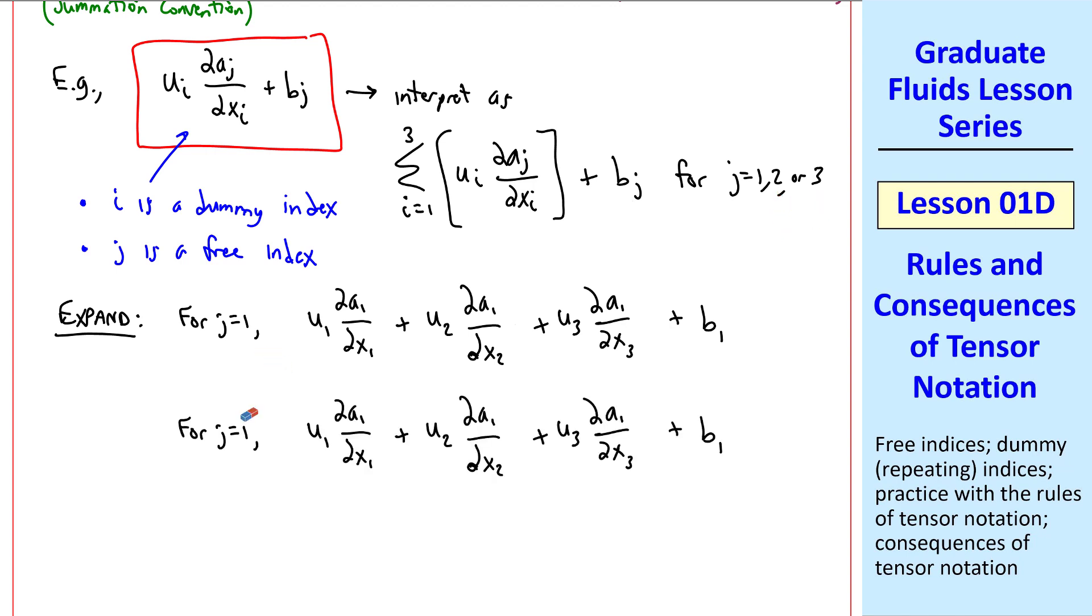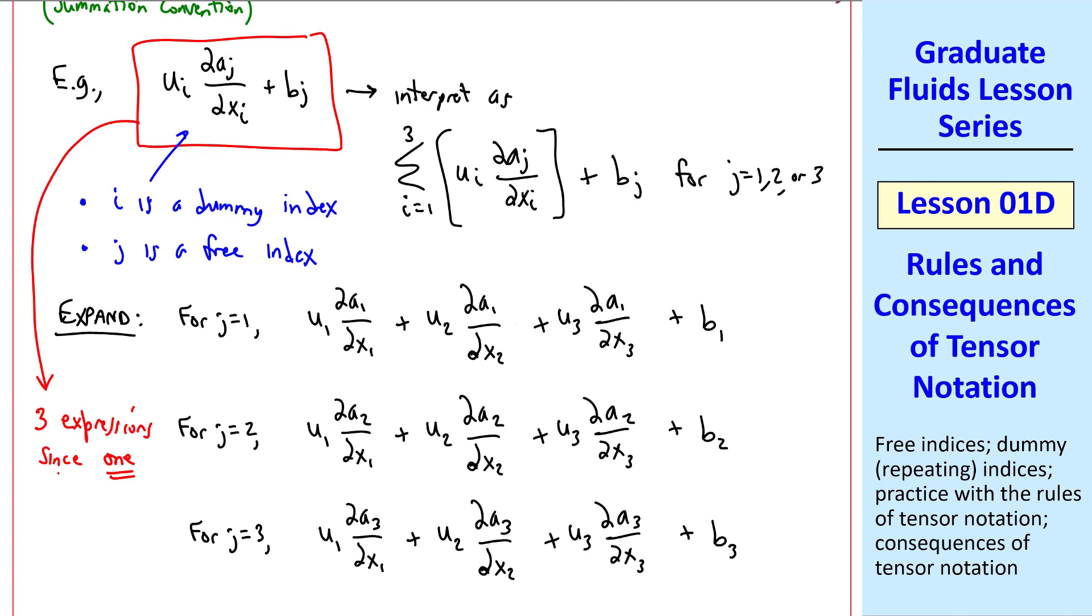I copied and pasted. I'm going to change all these j equal 1s to j equal 2s to get my second expression. I'm still summing over the i's, but now j is 2 everywhere. I do the same thing for j equal 3, putting a 3 in all of these terms where j was. The bottom line is that this is three expressions since there's one free index. This is thus a vector expression with one component for each value of j, j equal 1, 2, or 3.